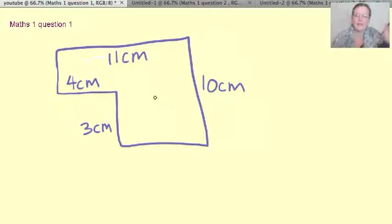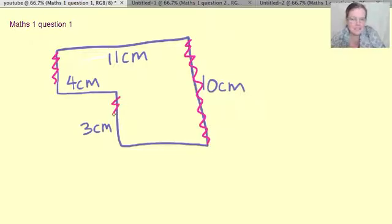Let's have a look here. Now we want to find out the perimeter. Peri means around, meter means measure, so it's a measure all the way around.